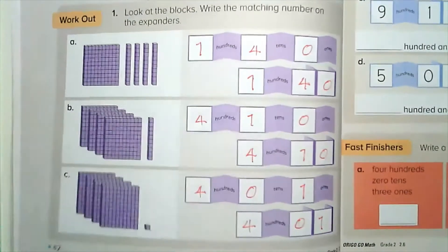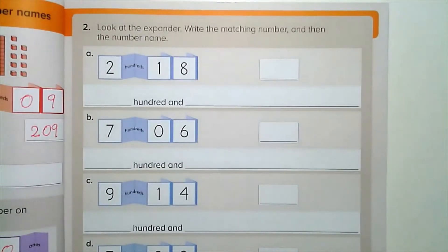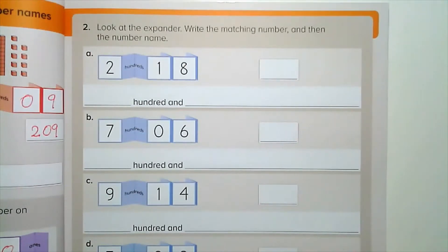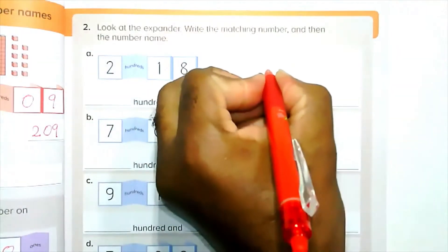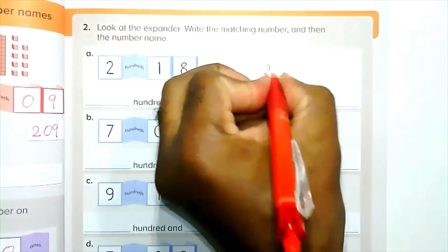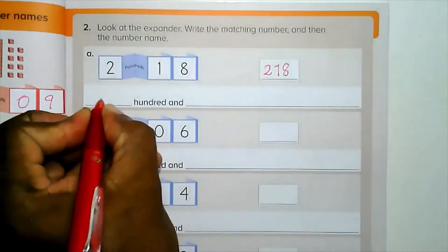Two hundred and one. Now let's go on to number two. Look at the expander, write the matching number and then the number name. For number two A, we have two hundred and eighteen.